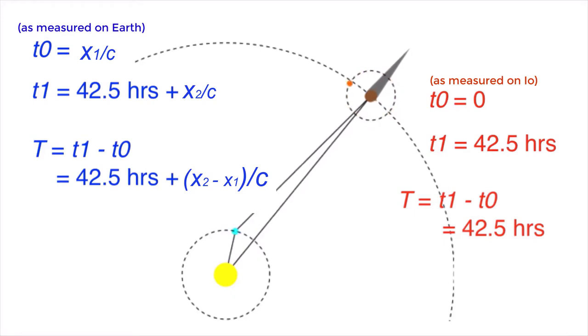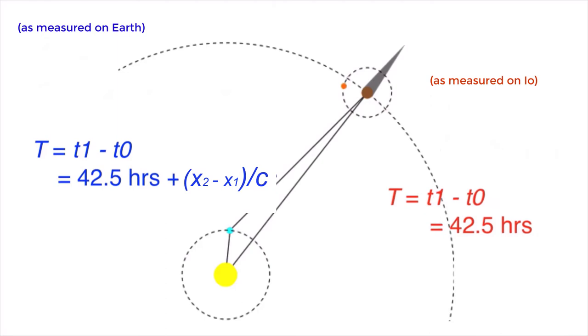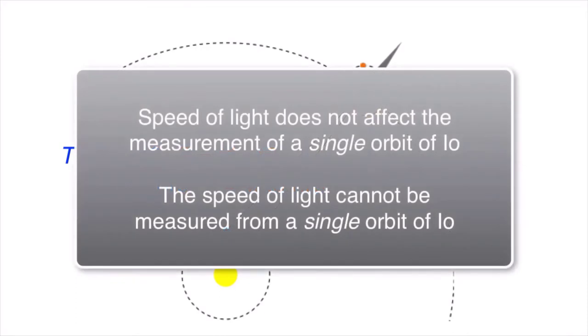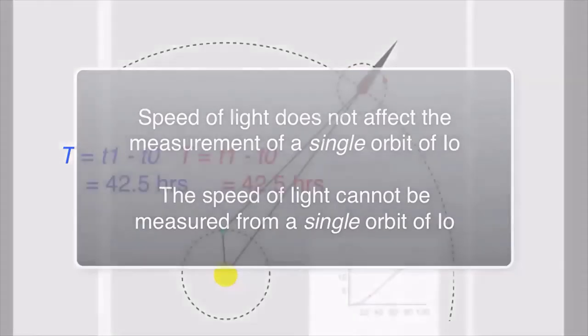As suggested by this pictorial demonstration, the difference in the path lengths, x2 minus x1, turns out to be very small. And c is such a big number that this whole number is small, and so it wasn't in the resolution of timepieces in Galileo's day. So the speed of light did not affect Galileo's measurement on Io's time of orbit. A single orbit of Io could not be used to find the speed of light.